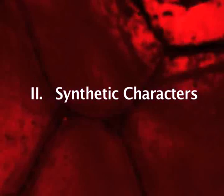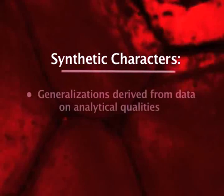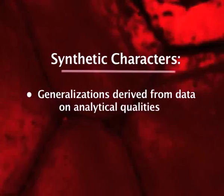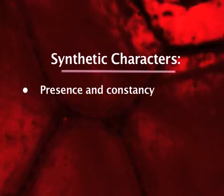Now let us talk about the second major category of community characters, that is, synthetic characters. Synthetic characters are generalizations or abstractions derived from data on analytical qualities and integrate many of the analytical characteristics. They are: A. Presence and constancy, B. Fidelity, C. Dominance, and D. Physiognomy.